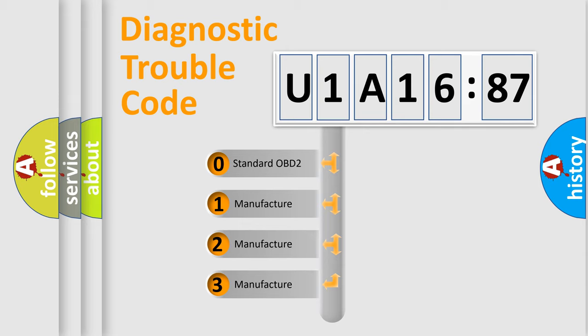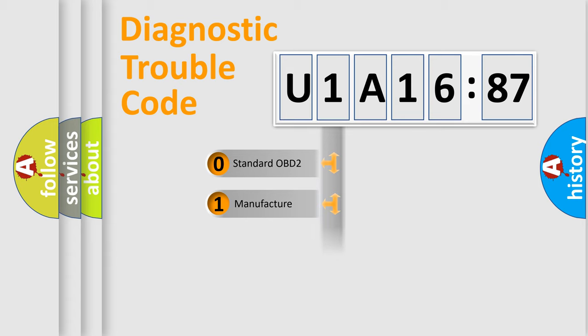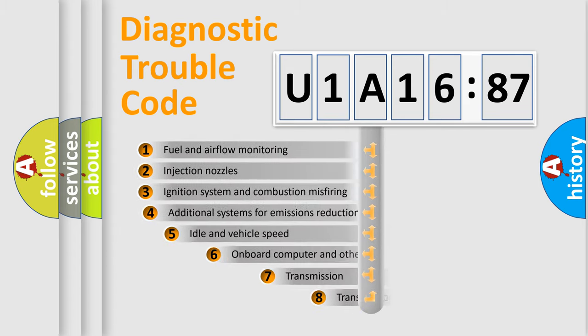If the second character is expressed as zero, it is a standardized error. In the case of numbers 1, 2, or 3, it is a more precise expression of the car-specific error.